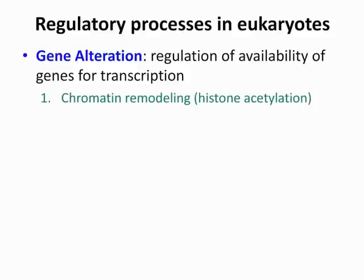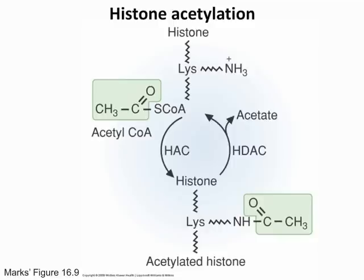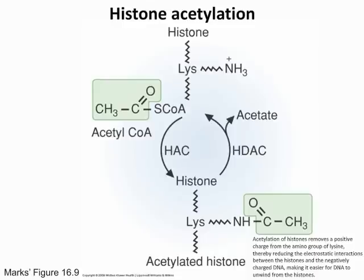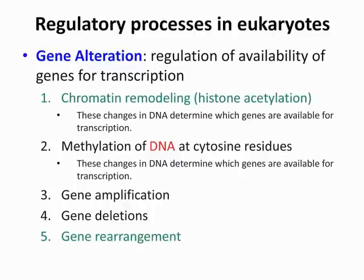Learning objective 5 is very important — most exam questions will come from this. We start with gene alteration, which includes several factors. The first is chromatin remodeling. You just have to know that an example of chromatin remodeling is histone acetylation — adding an acetyl group to a histone — which removes a positive charge from lysine, reducing electrostatic interactions between histones and DNA and making it easier for DNA to unwind. He focuses mainly on chromatin remodeling and gene rearrangement, but you should know all five fall under gene alteration.